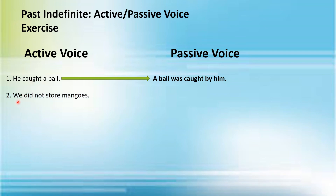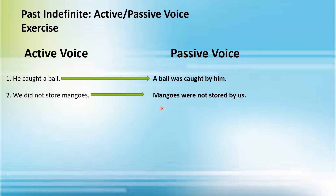See the second sentence: 'We did not store mangoes.' This is the negative sentence of past indefinite tense — 'did not' helps you identify that. 'Mangoes' here is the object; you take 'mangoes' to the start of the sentence. Your sentence would look like this: 'Mangoes were not stored by us.'